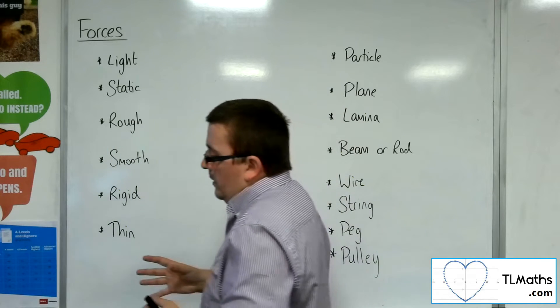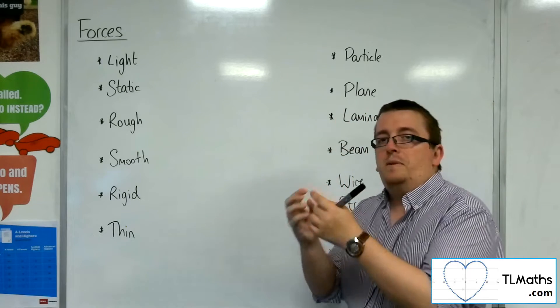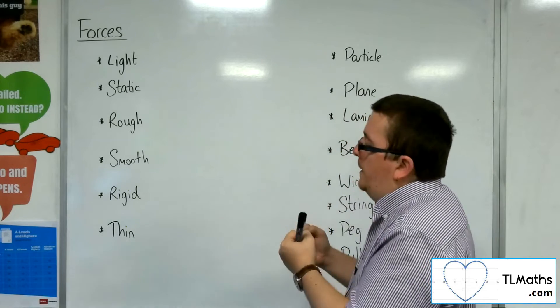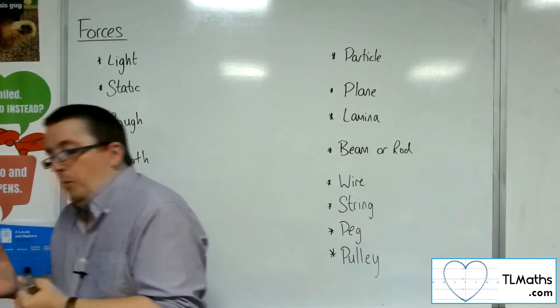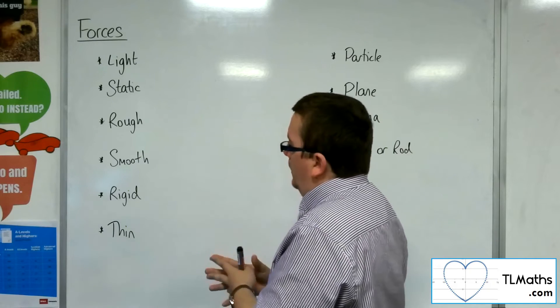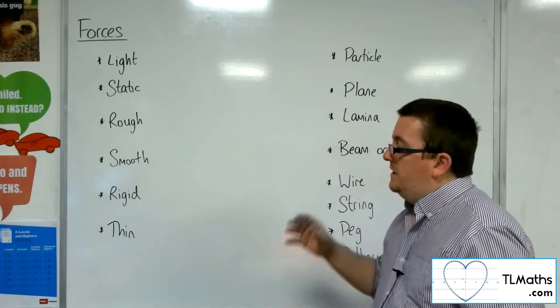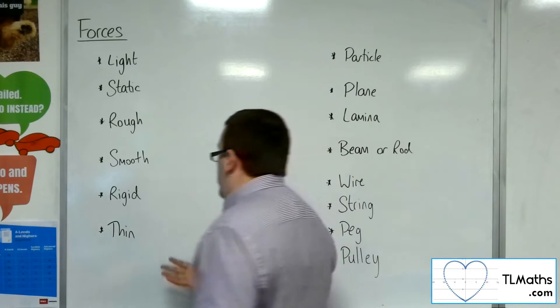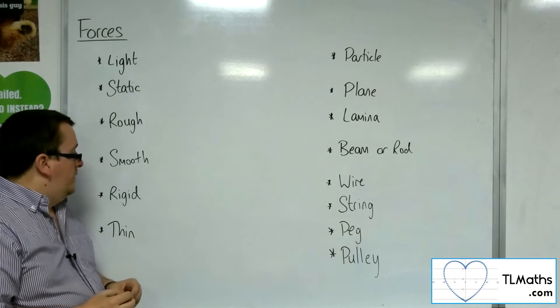Now, rigid means that if something is rigid, then it cannot be bent. A rigid body just means that you cannot bend it. Thin means it's got negligible thickness. If something's thin, it's negligibly thick, so we don't need to worry about how thick the thing is.